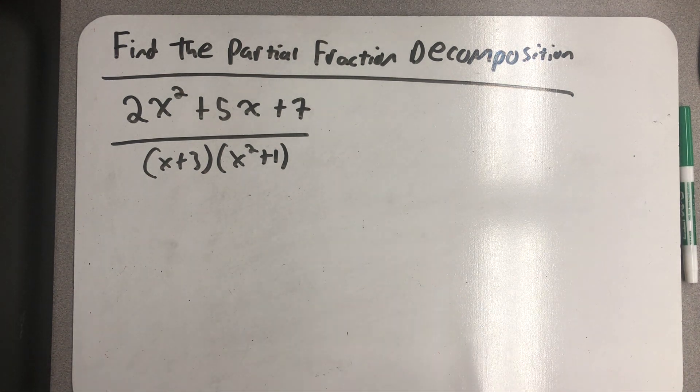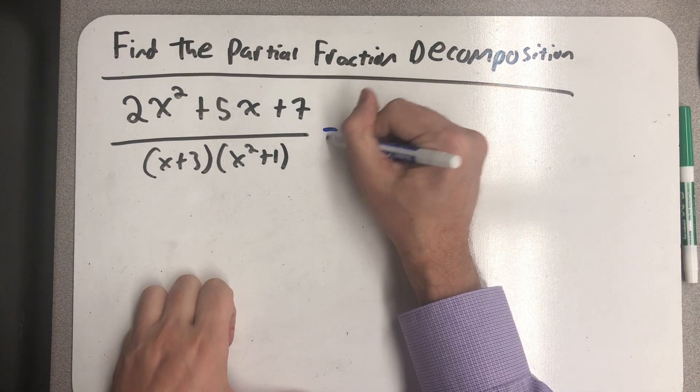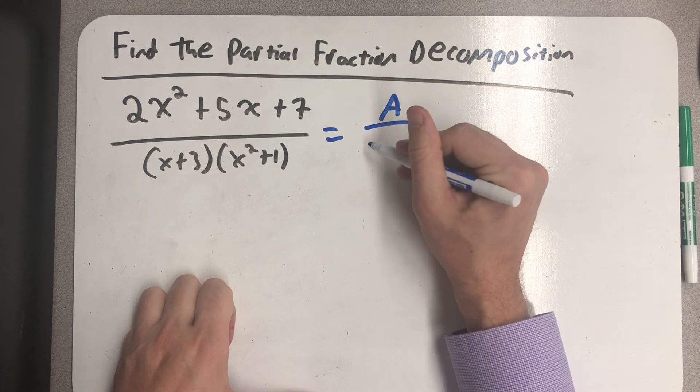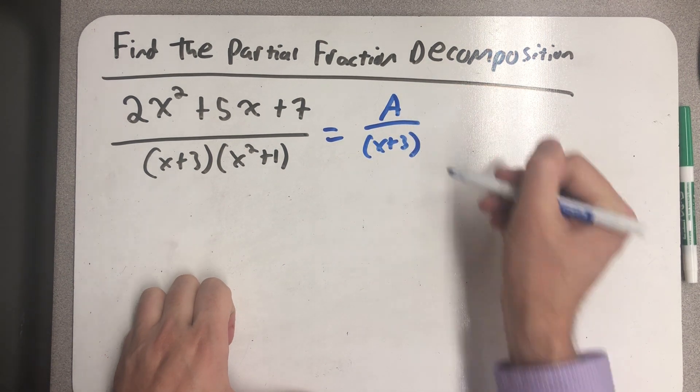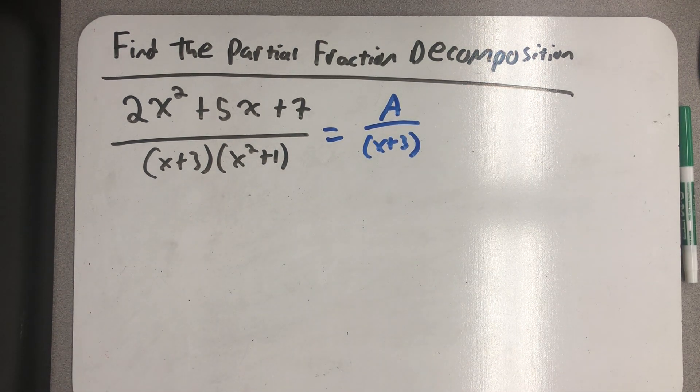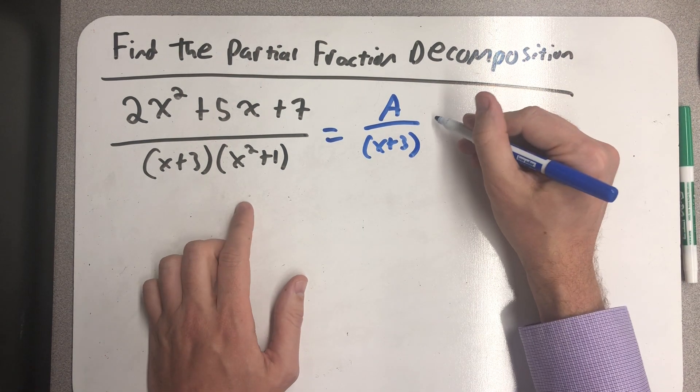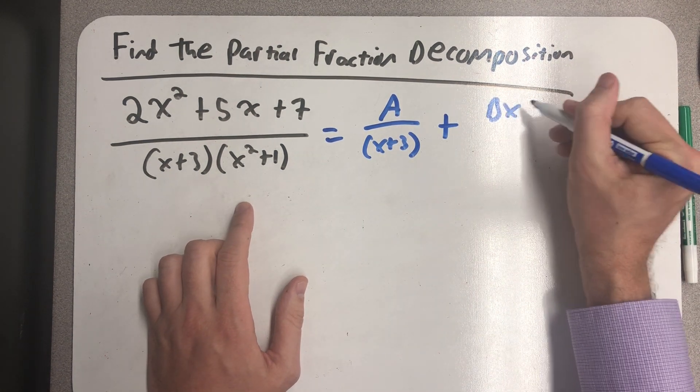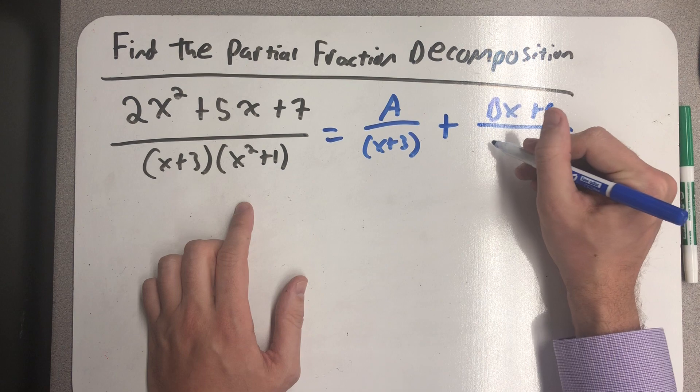Well, I have a linear factor, and so that would come with a partial fraction that looks like this. And I have an irreducible quadratic factor, which will come with a partial fraction that looks like this.